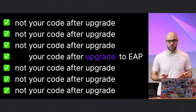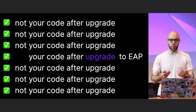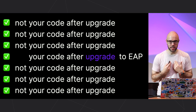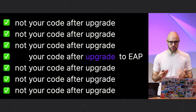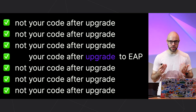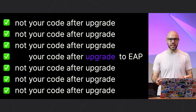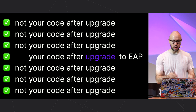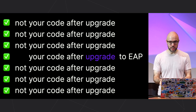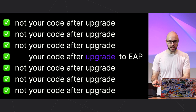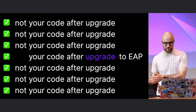The best way to avoid this is to give your feedback to our team as early as possible. To make it easier for you to do so, we release Early Access Preview versions of Kotlin called EAPs. This allows you to install it, try it in your own project, look out for bugs, and report them to our team.